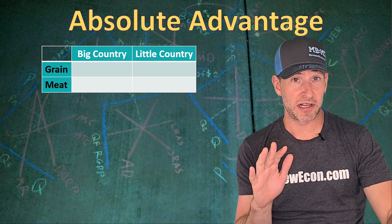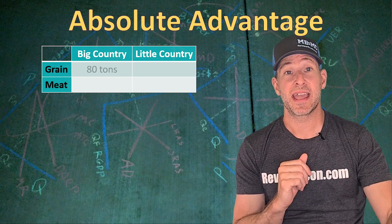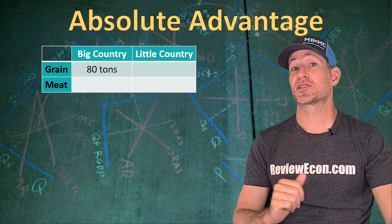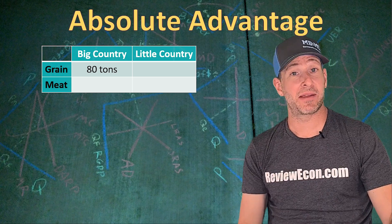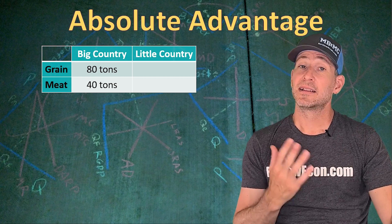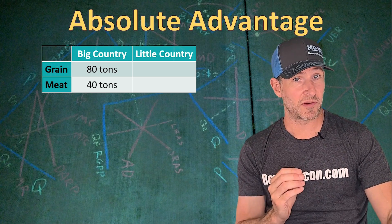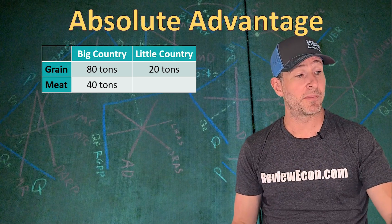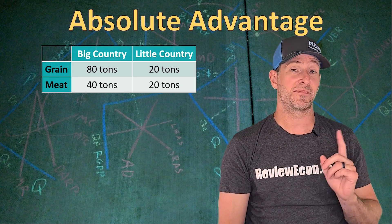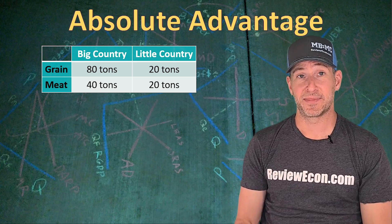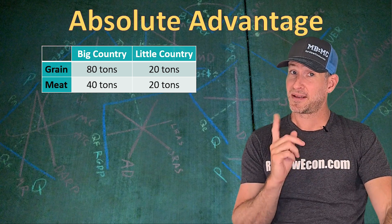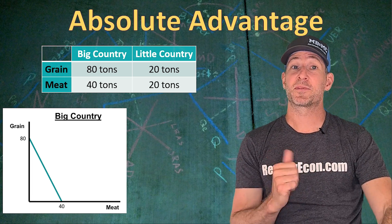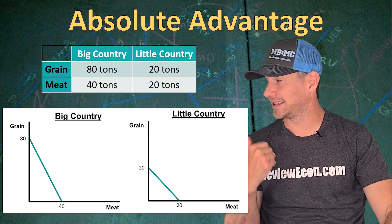Big Country, if they put all of their resources towards the production of grain, can produce 80 tons of grain. If they put all their resources towards the production of meat, they will have 40 tons of meat. Little Country, on the other hand, if they put all of their resources towards grain, will have 20 tons of grain, and if towards meat, 20 tons of meat. If we put these numbers on Production Possibilities curves, Big Country's and Little Country's curves would look like those shown.